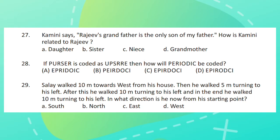Question 29. Sele walked 10 meters towards west from his house. Then he walked 5 meters turning to his left. After that he walked 10 meters turning to his left. And in the end he walked 10 meters turning to his left. In what direction is he now from his starting point?